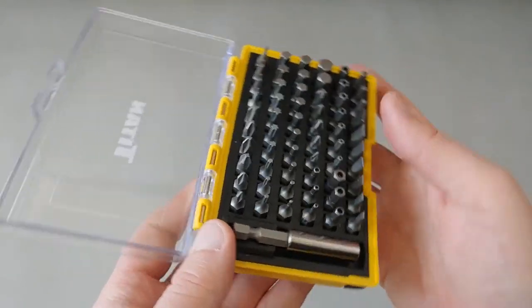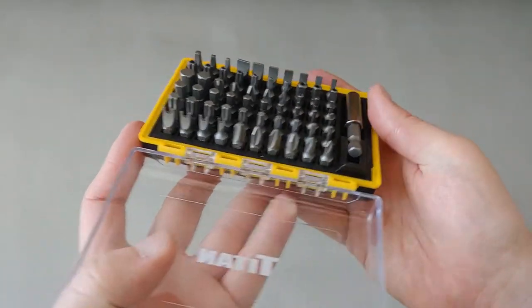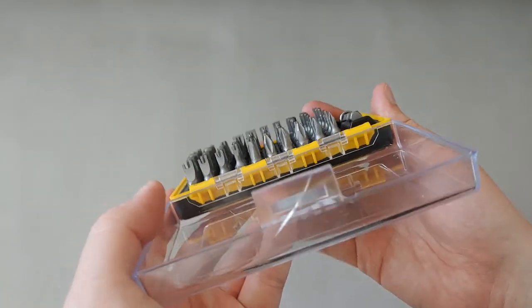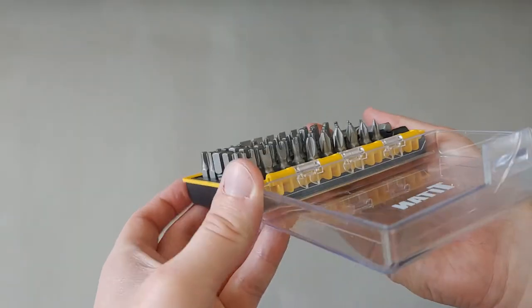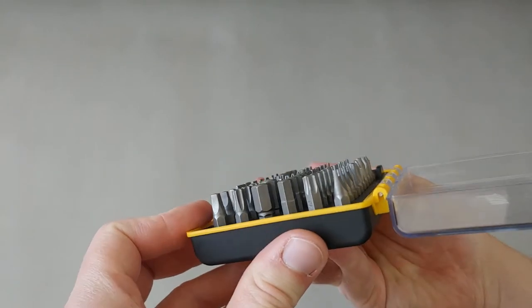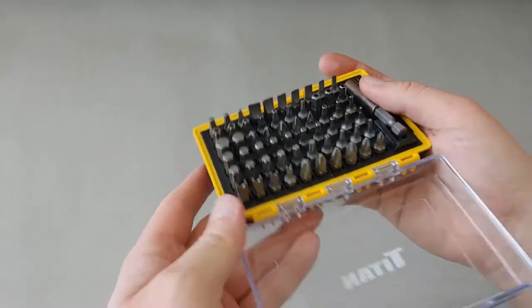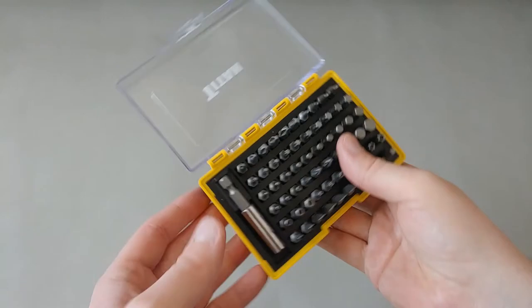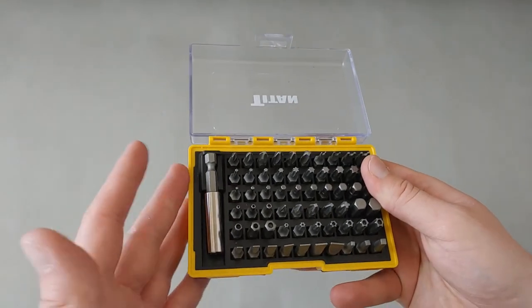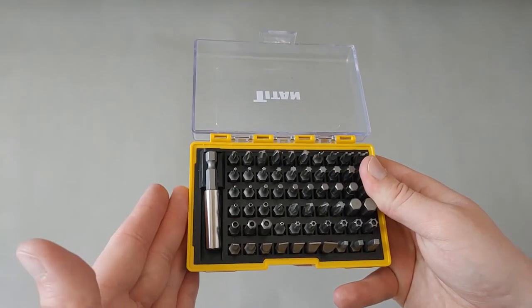These are chrome vanadium steel bits as well, so these are not S2 bits. They're chrome vanadium steel bits. You can see they're pretty precise, they're well done. I don't have any real complaints with the actual bits. However, this actual bit set—it's more the design and construction of the case.